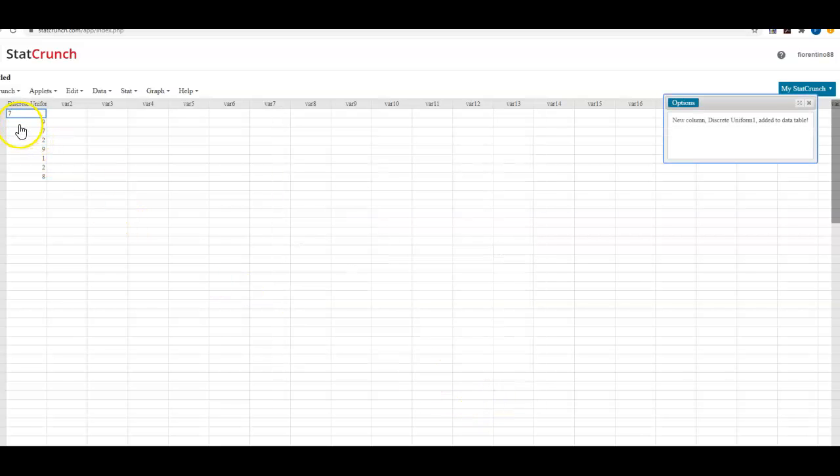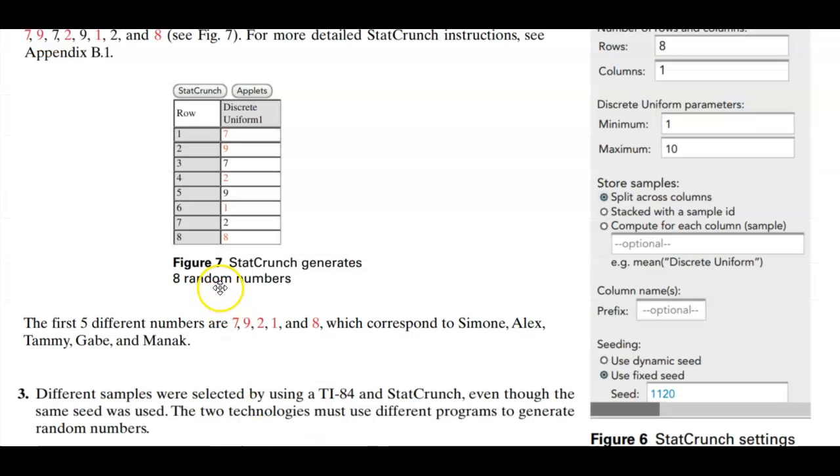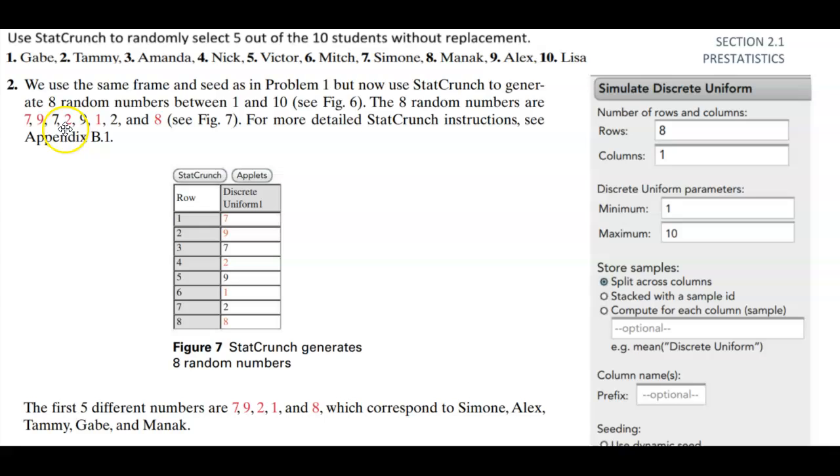Now when I select Compute, I'm going to get the following numbers 7, 9, 7, 2, 9, 1, 2, 8. Now going back to that screen, we end up getting 7, 9, 7, 2, 9, 1, 2, and 8.